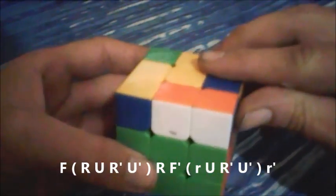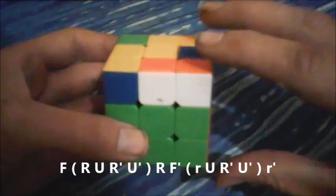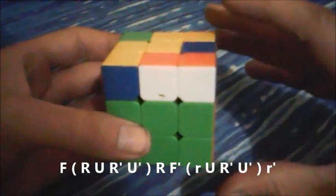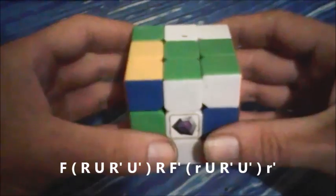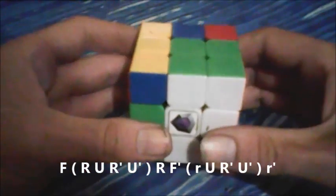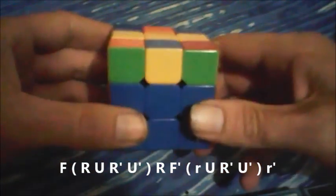This next part is just a modified sexy move with the first move being R wide instead of R: R wide, U, R', U', and then we finish with R wide'. Just a few examples so you can follow along.